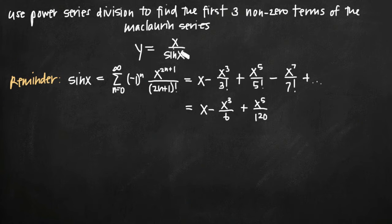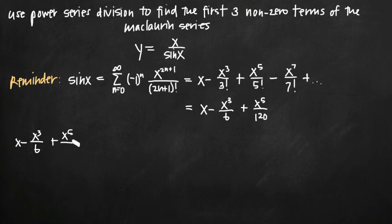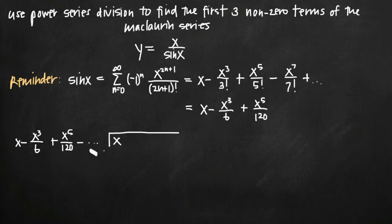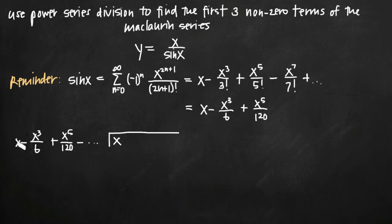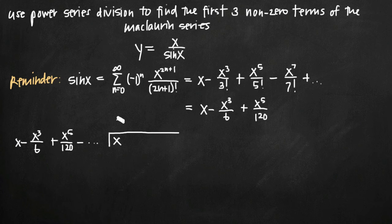Since we have x divided by sine of x, we're going to take this power series we just found — x minus x cubed over 6 plus x to the fifth over 120 minus dot dot dot — and divide x by this power series, because this represents sine of x. We need to figure out what we need to multiply by x, the first term, in order to get x, which is the first term inside the long division bracket.